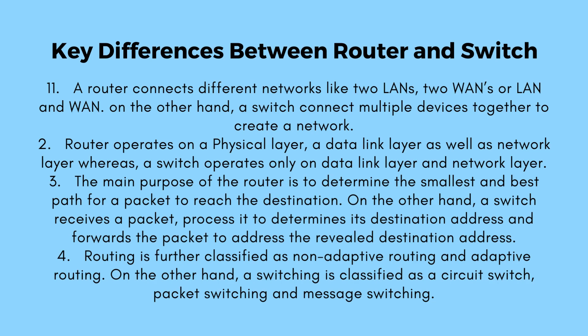Key differences between router and switch. Number 1: a router connects different networks like two LANs, two WANs, or a LAN and WAN, whereas a switch connects multiple devices together to create a network. Number 2: a router operates on the physical layer, data link layer, as well as the network layer, whereas a switch operates only on the data link layer and network layer.